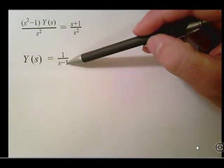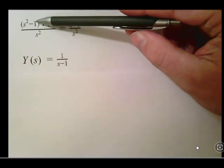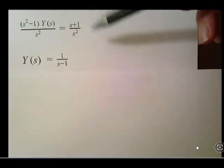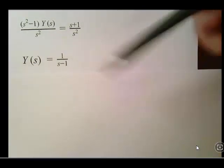And S plus 1 over S squared minus 1. If you actually notice this is the difference of two squares, S plus 1, S minus 1. And that cancels out essentially. So you're left with this, 1 over S, 1 over S minus 1.